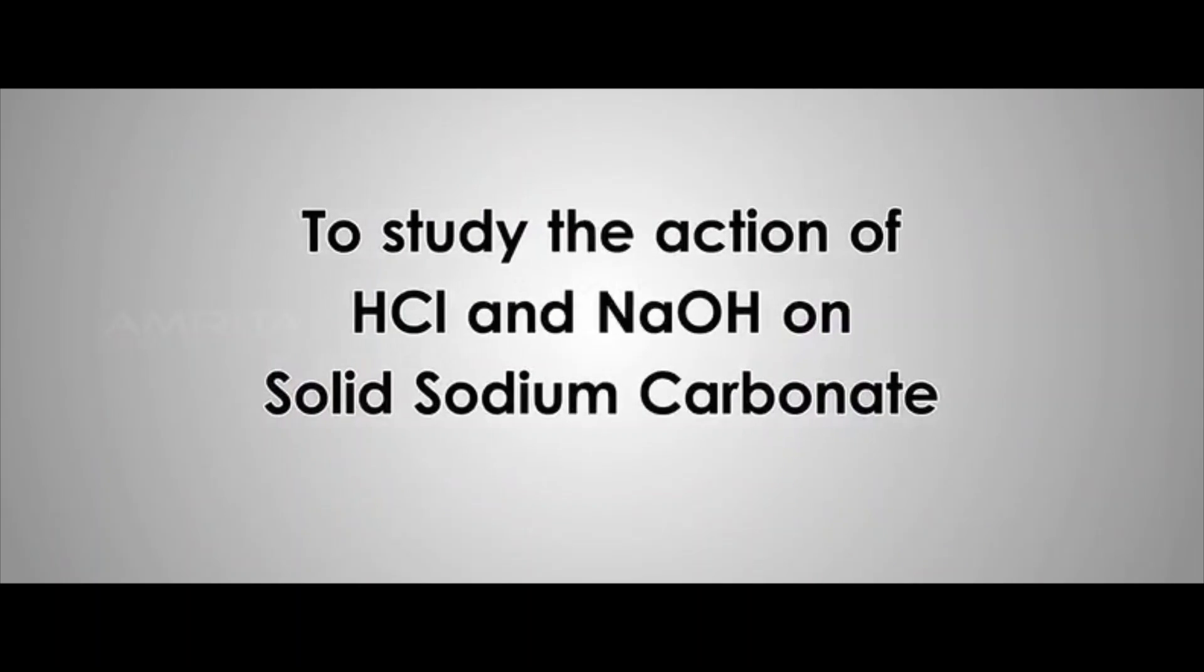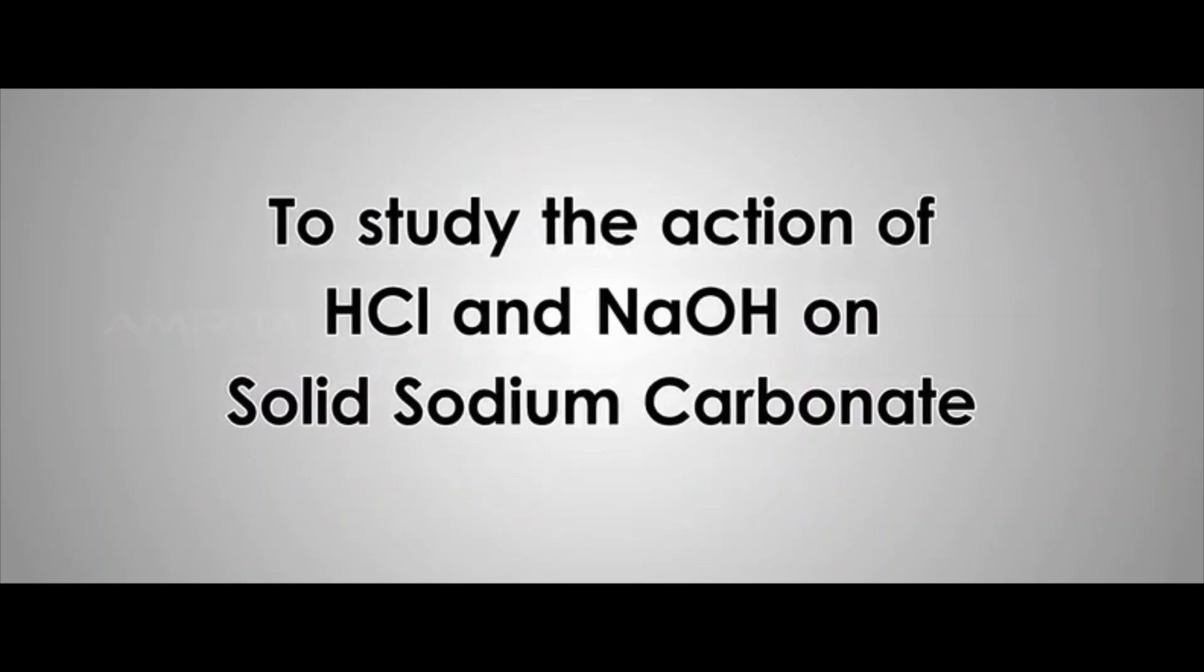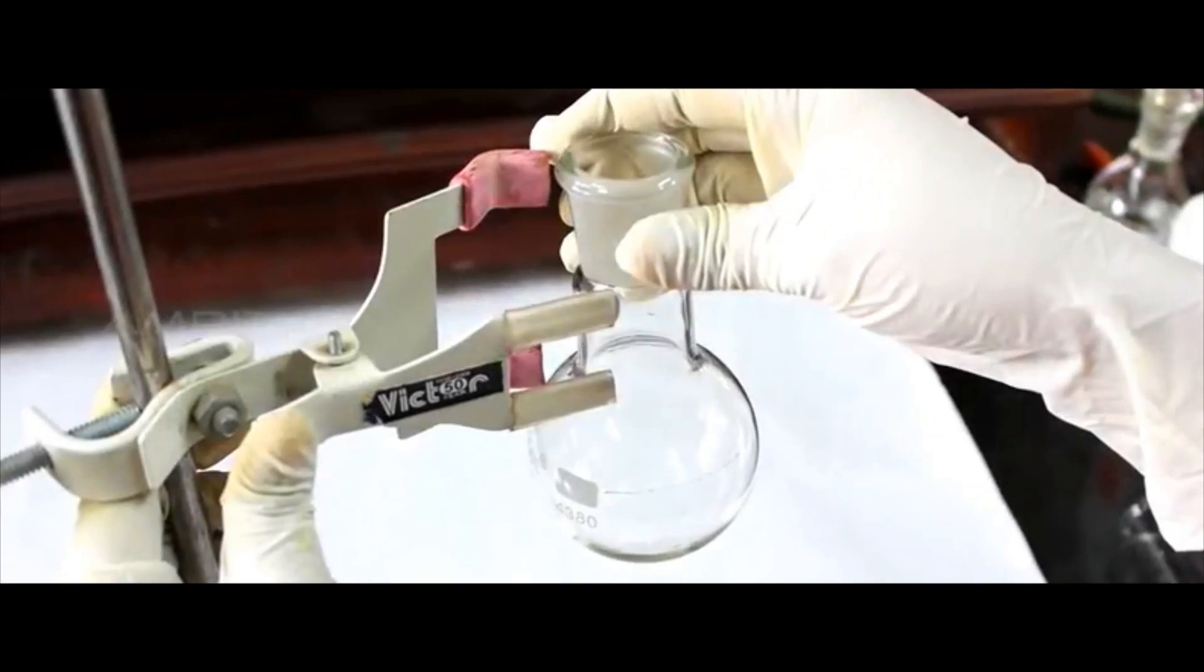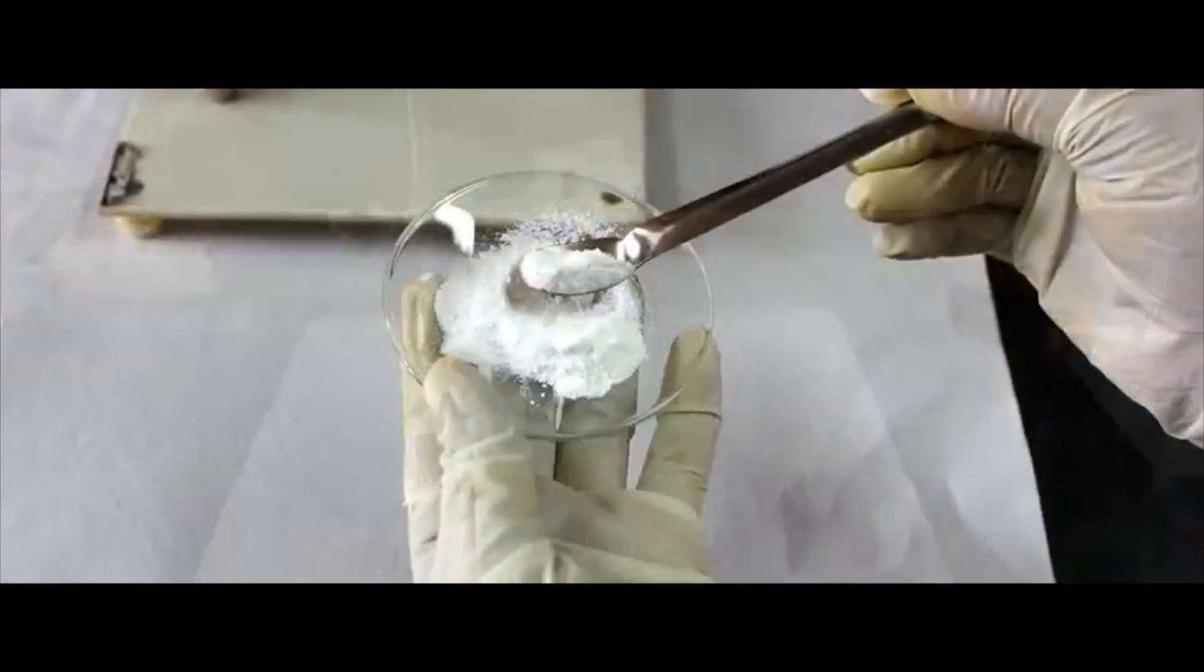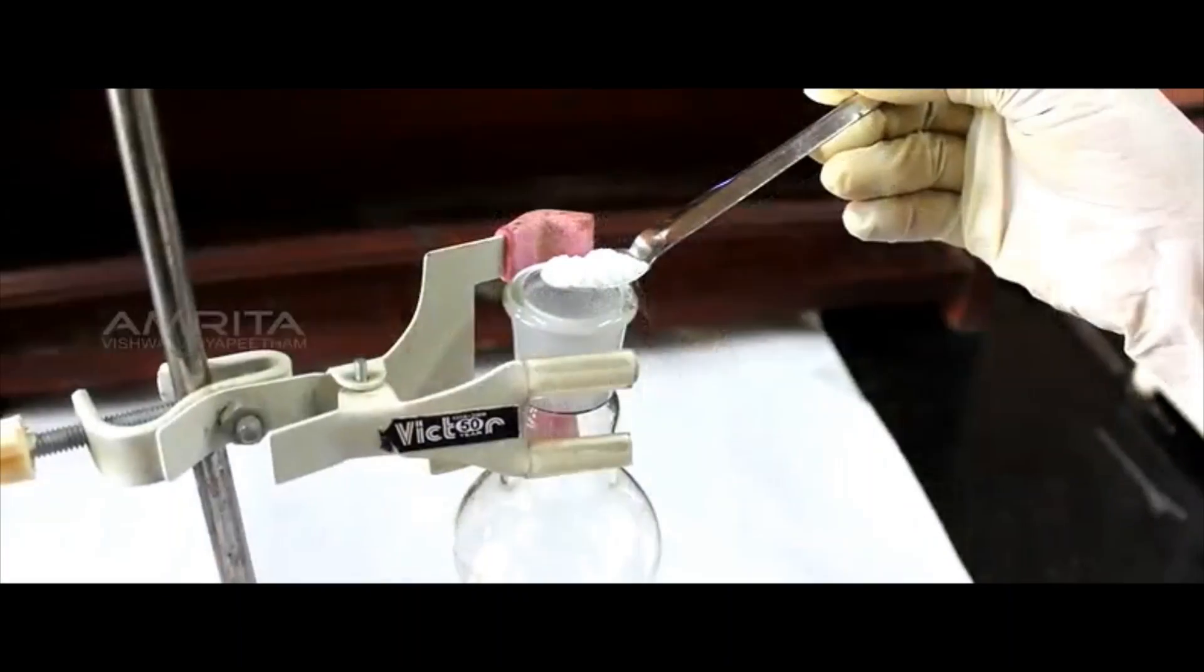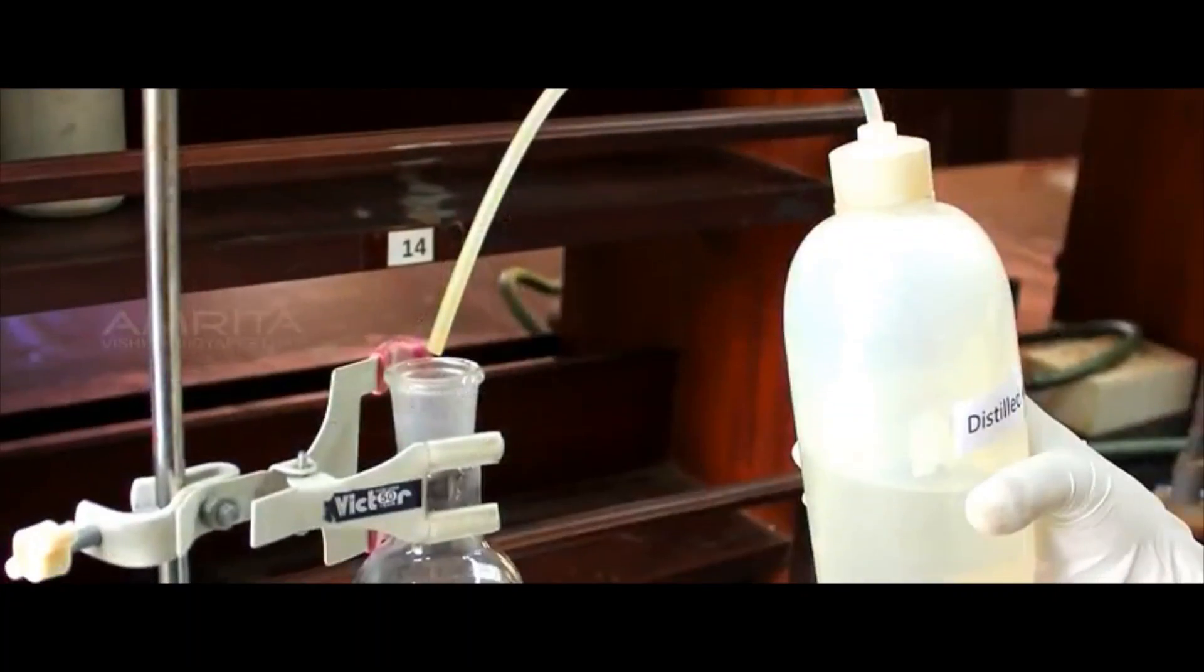To study the action of HCl and NaOH on solid sodium carbonate, first clamp the round bottom flask to the stand and add a small quantity of sodium carbonate and a few drops of distilled water into it.